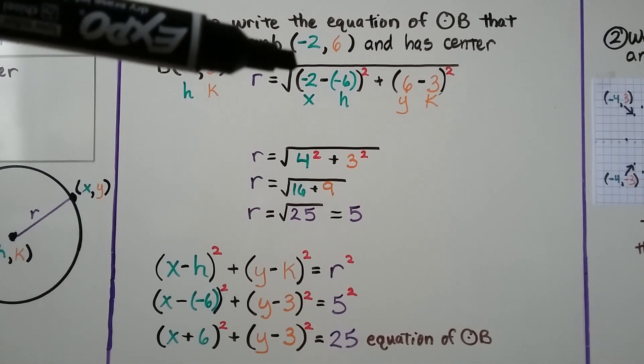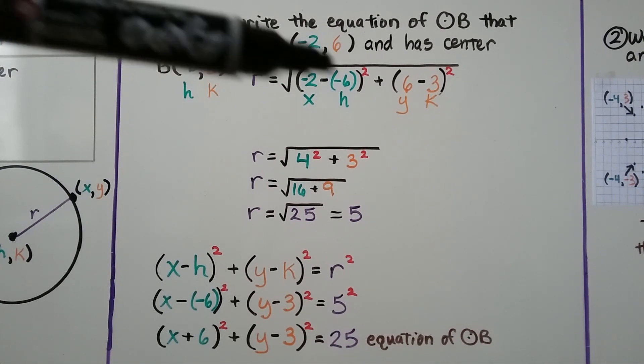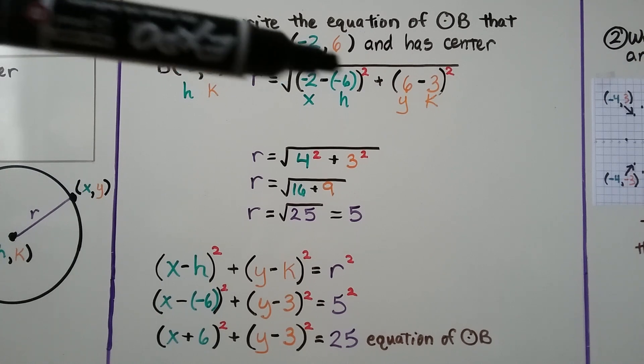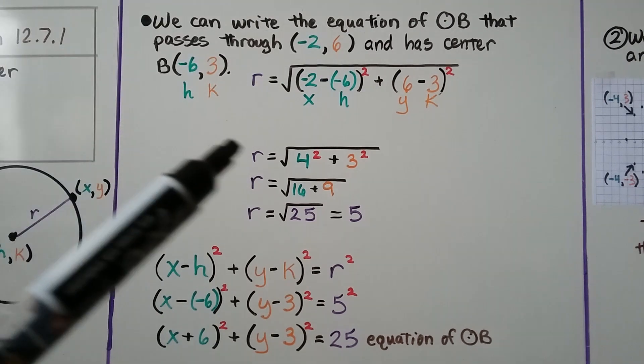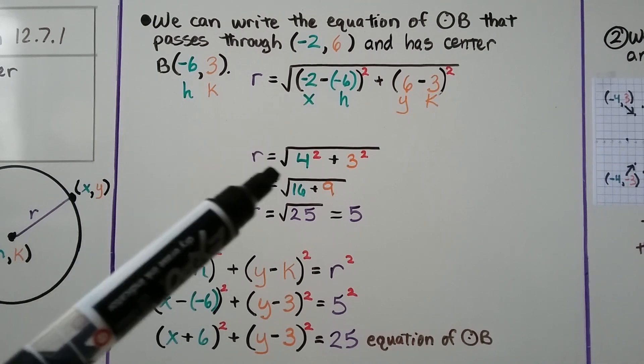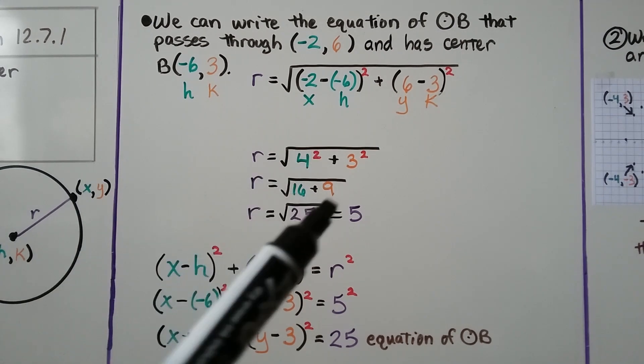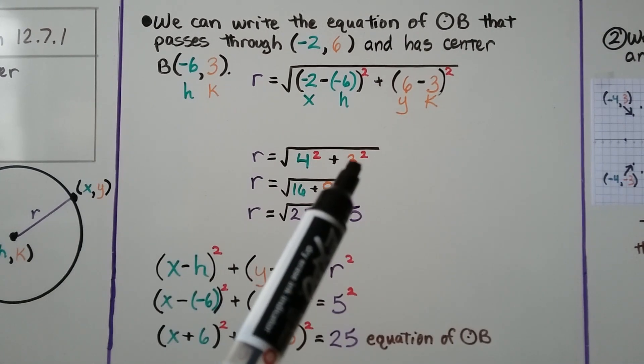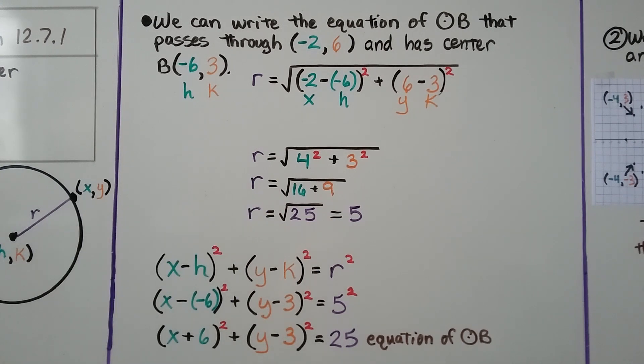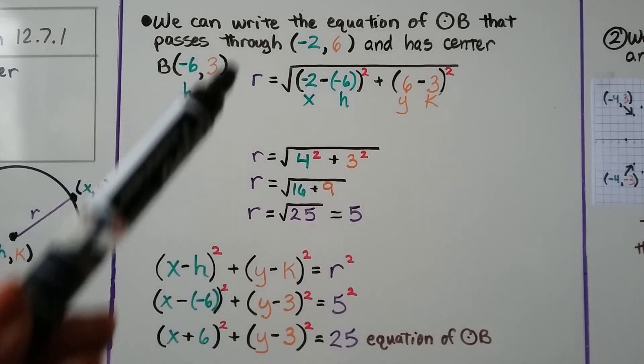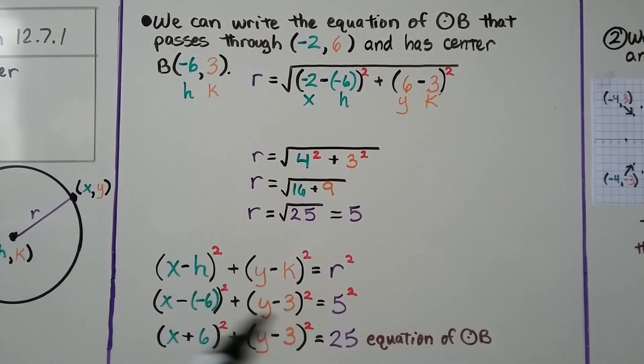That's going to give us negative 2 minus a negative 6. We're going to add the opposite. If we have a minus negative 6, we're going to add 6. So negative 2 plus 6 is a positive 4 squared. And 6 minus 3, that would be 3 squared, which is the square root of 25. So we know our radius is a 5. And we can put that into the formula. And we put in the negative 6 and the 3 for our h and k. We get x plus 6 squared plus y minus 3 squared equals 25. That's the equation of circle b.